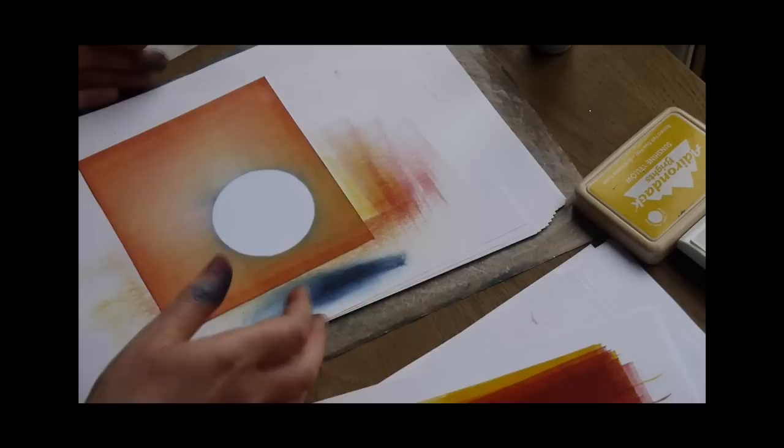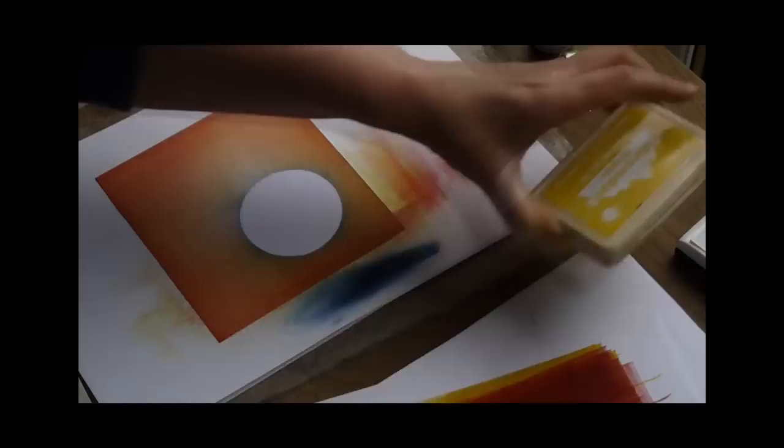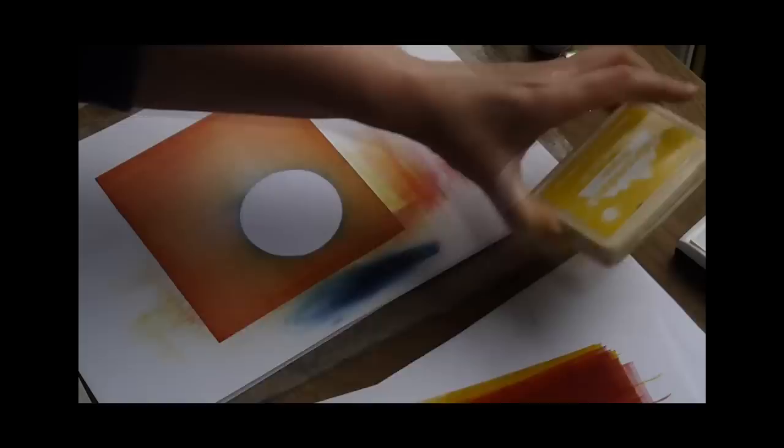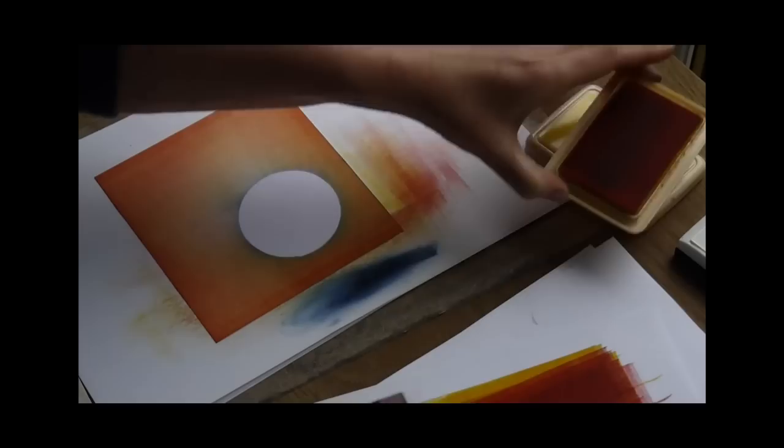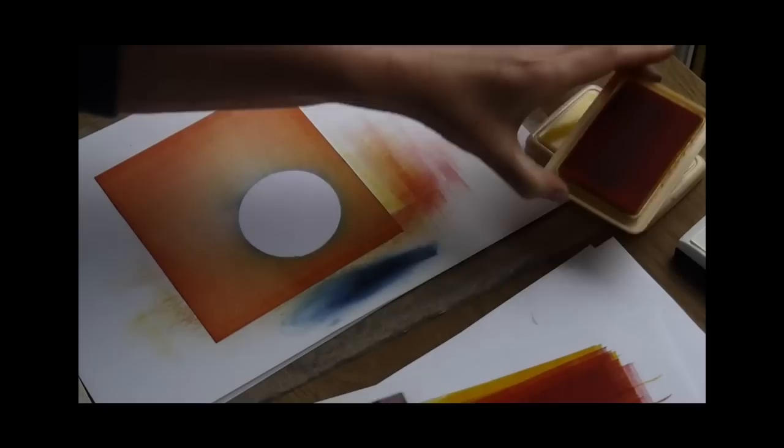And now we can take that off. Now, because we've got a very white moon or sun here, we're going to sort of dim that down a little by just adding the sunshine yellow over the top. So, inking up again, taking off that excess and then simply just brayer over the top of that and it just mutes that whiteness.